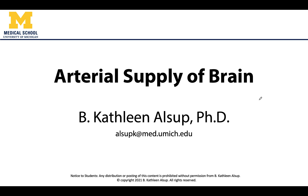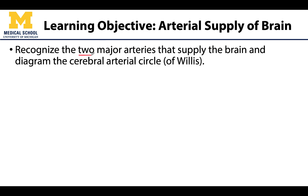Hello, this is Dr. Alsip. In this video we will be discussing the arterial supply of the brain. There are two major arteries that supply the brain, and each one has multiple branches, some of which we will discuss specifically — those that make up the cerebral arterial circle, more commonly referred to as the Circle of Willis. We will also discuss why having this collateral blood flow is important in maintaining constant blood supply to the highly metabolic brain.